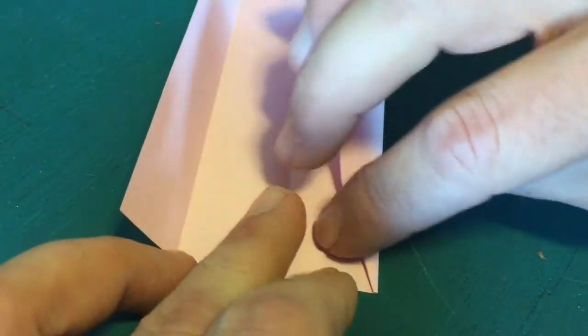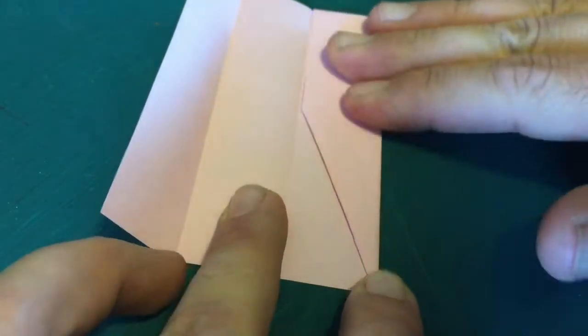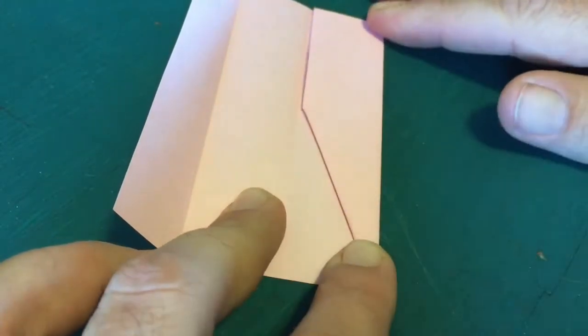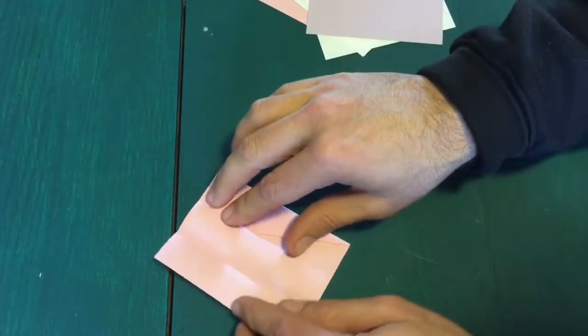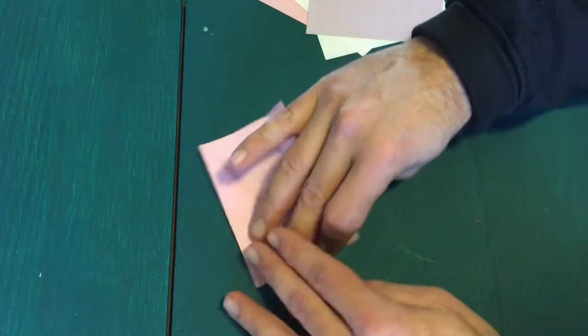Now fold the quarter fold back towards the half and then rotate the paper 180 degrees so that you can do the exact same fold to the opposite corner.